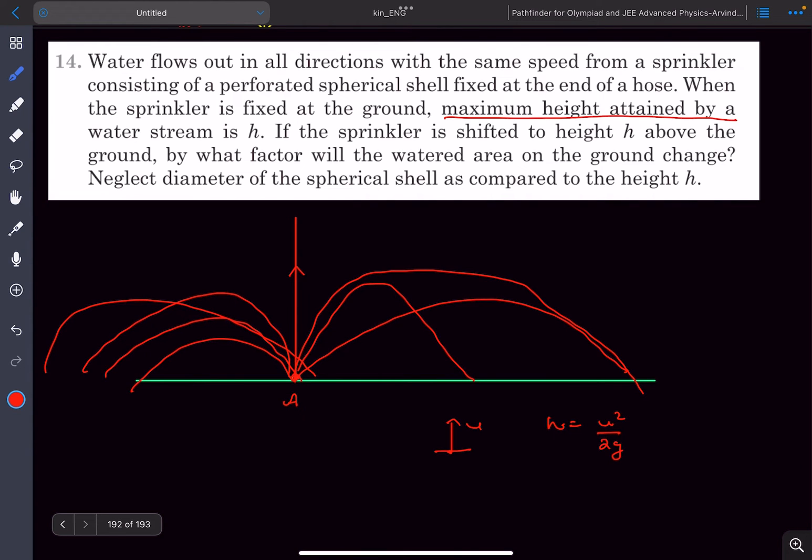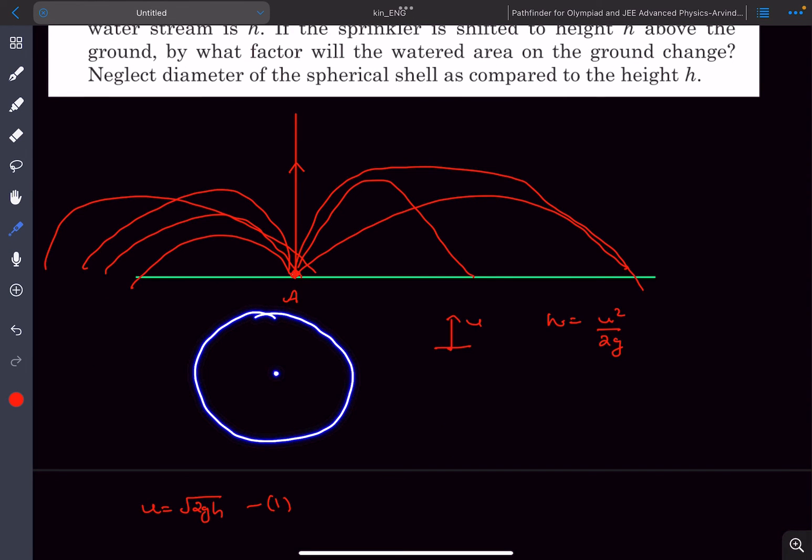Now we have to comment on the maximum area that is watered. The maximum area will be corresponding to this circle whose radius is r_max of this projectile.